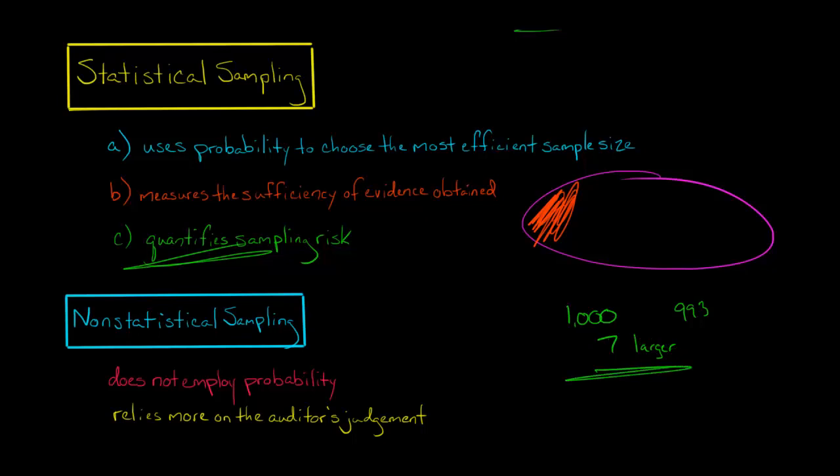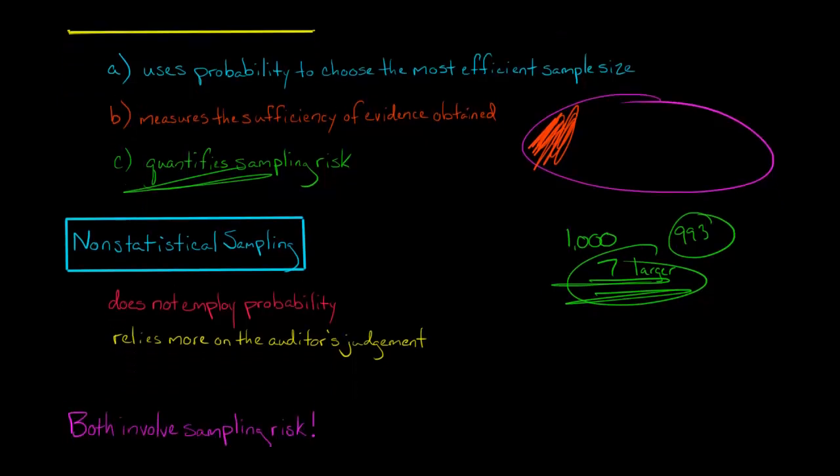Let's just have that be our sample. So we're not using probability to figure what should be the optimal sample size. We're just saying, let's use our judgment. There's seven really large purchase orders, and then the other ones aren't that large. So let's just sample the ones that are really large.